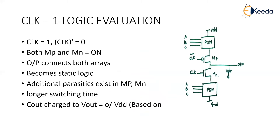When clock is made equal to 1, this phase is called logic evaluation. When clock is equal to 1, clock bar will be equal to 0. So 1 is given to the N-MOSFET and 0 is given to the P-MOSFET. When 1 is given to MN it will turn on MN, and 0 given to MP (PMOS) will also turn on your PMOSFET. So during logic evaluation, clock equal to 1 turns on both your MP and MN.